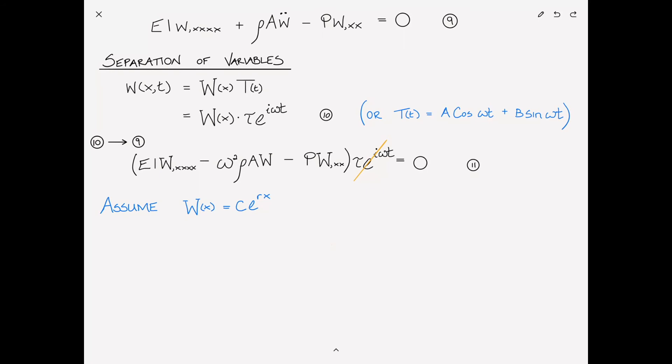We proceed in the usual way by assuming a solution for W of X of the form C e to the RX. This is a standard procedure we've used all along. Substituting equation 12 into equation 11, we get EI R to the fourth minus omega squared rho A minus P R squared, all times C e to the RX equals zero. Again, we can cancel C e to the RX, which is never zero. We can simplify by dividing through by EI as R to the fourth minus P over EI R squared minus rho A omega squared divided by EI equals zero. We'll call this equation 13, the characteristic equation.